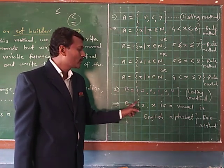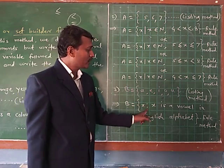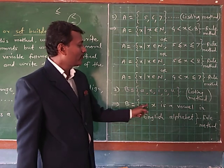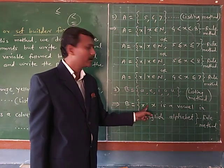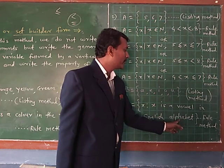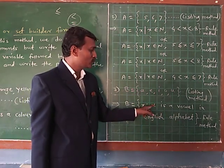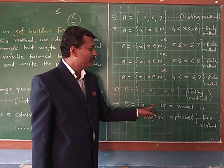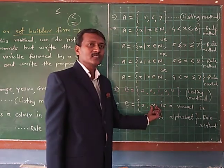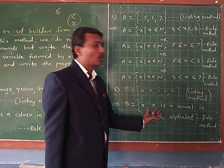Therefore, B is the set of all x — here that is called a colon, use colon or vertical line, and its meaning is 'such that' — x is a vowel in the English alphabet. Meaning x is A, E, I, O, or U. x is the variable and x is a vowel in the English alphabet. This is in the rule method.